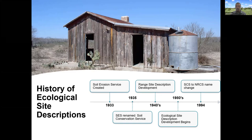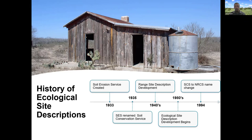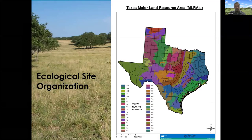Around the 1980s, theories about plant ecology really started to develop. We went from thinking about poor, fair, good, excellent range condition to alternative steady states, where you could have different plant communities and move from one to another if you passed a threshold — and one wasn't necessarily worse than the other. This represented a broader way of thinking about ecology, as opposed to the older thinking more tailored to the Great Plains and central US.